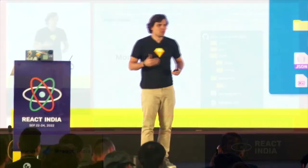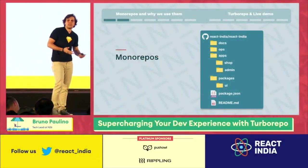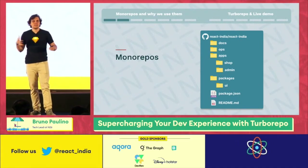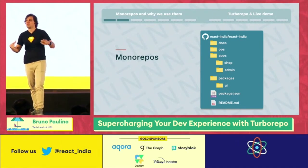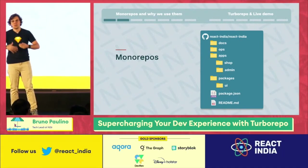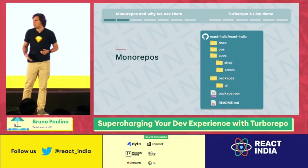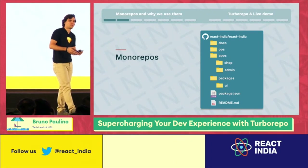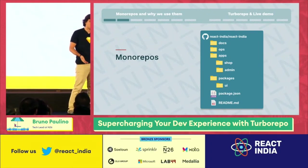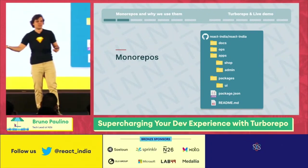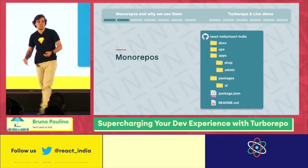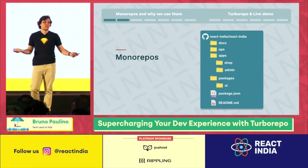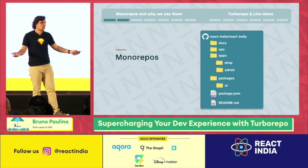But what if there was another way? Monorepo is the way that some companies are adopting now — it's just meshing them together in the same repository. Of course, it's not like a monolith. Sometimes people confuse monorepos with monoliths. A monorepo is basically a way of structuring your codebase, but you can still have microservices or microfrontends in a monorepo. The difference is that they're all in the same repository.